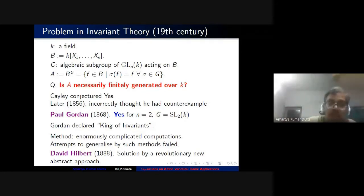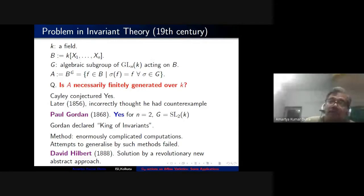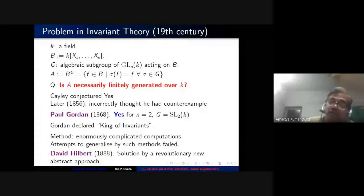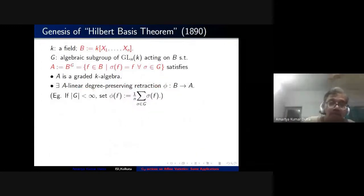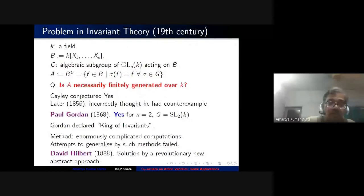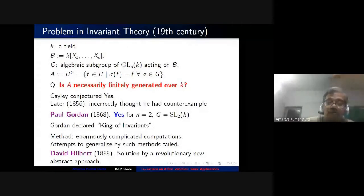Gordon simplified it further. Amy Noether, who was a PhD student of Gordon, initially worked in the highly computational Gordon-type style. But after coming in contact with Hilbert's work, she completely shifted and became more abstract than Hilbert himself. Gordon proved the result only for n = 2, and Hilbert made a massive generalization.